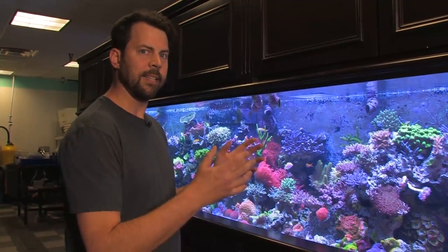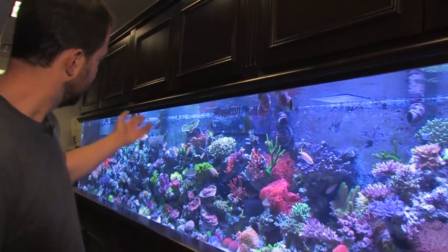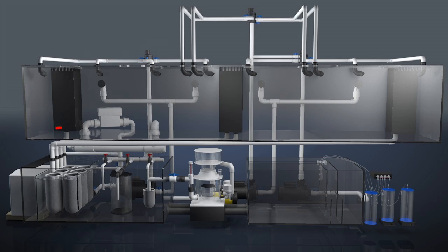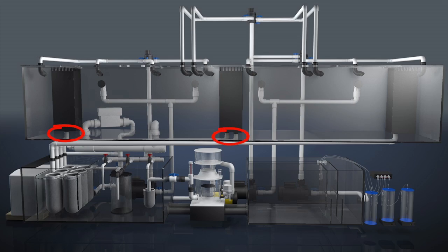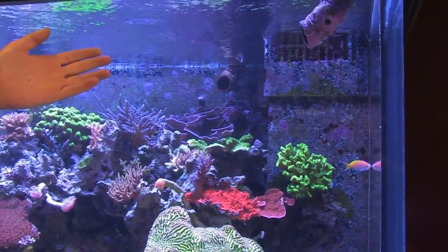This 800 gallon tank has actually three overflow boxes in it. There's one at the far left side that has a single two inch drain in it. This overflow box in the middle has two two inch drains. On the far right side we have our third overflow box with a single two inch drain.